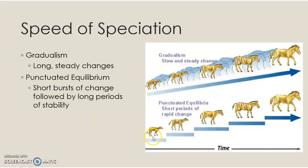Punctuated equilibrium covers the same amount of time from point A to point F, but rather than having all of these little intermediary horses, it says there's just a rapid change that happens all at once and now there's a new species of horse. That species lives for a really long time, then all at once — a new species of horse. So it's short bursts of change followed by long periods of stability, punctuated by breaks with equilibrium being that period of stasis. The argument is that maybe those intermediate fossils never existed as living organisms.